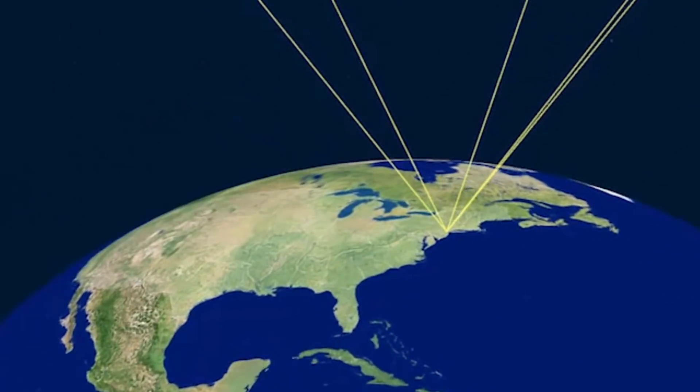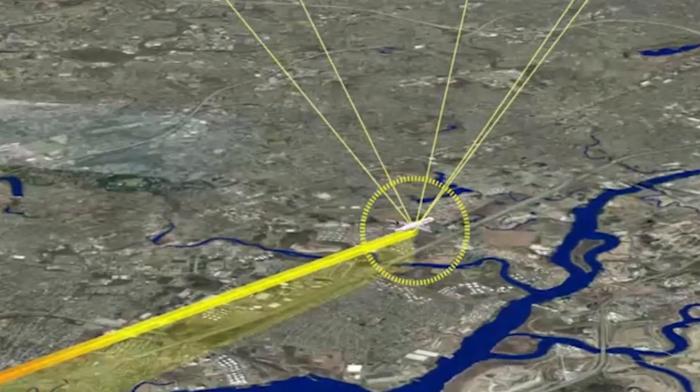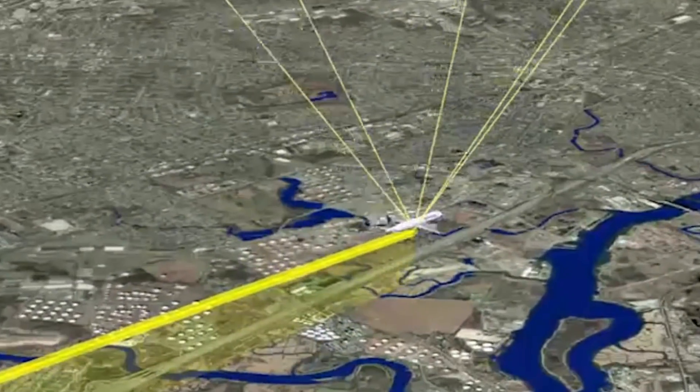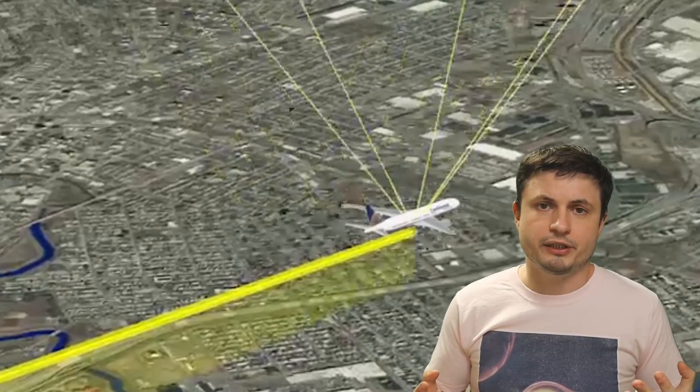Now you might have seen this video before, but essentially this kind of shows you how GPS system works by triangulating the exact location of a typical object like this airplane and then showing us exactly where it's located on planet earth. But what exactly is happening here?